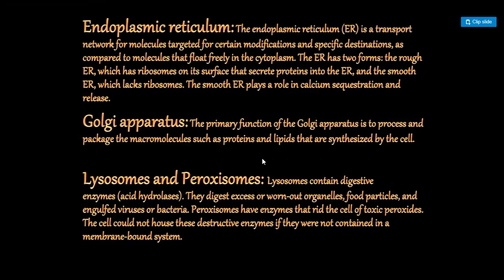The next terms are lysosome and peroxisomes. Lysosomes contain digestive enzymes. They digest excess or worn-out organelles, food particles, and engulfed viruses or bacteria. They have enzymes that rid the cell of toxic peroxides. These destructive enzymes are safely contained in a membrane-bound system. Lysosomes are simple, tiny, spherical sac-like structures.